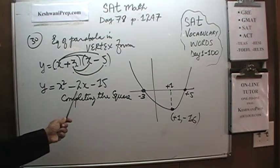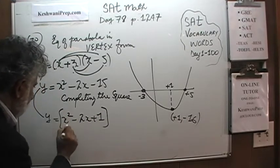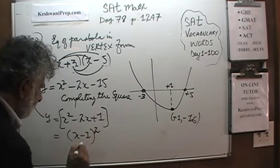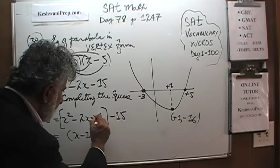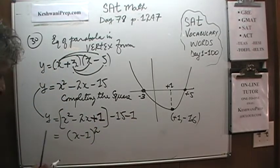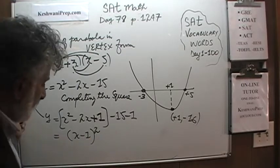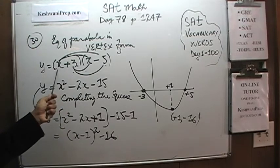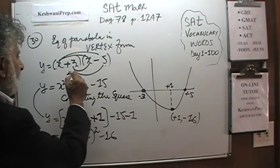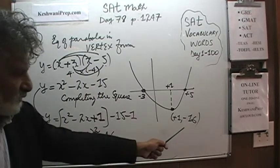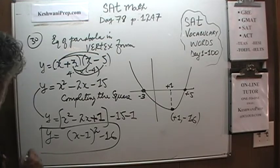We have x squared minus 2x. We write this as x squared minus 2x plus 1, which is (x minus 1) squared. Since we added 1 that wasn't originally there, we subtract 1 to undo it. So: y equals (x minus 1) squared minus 15 minus 1, which equals (x minus 1) squared minus 16. This matches the y-coordinate of the vertex we found earlier, and confirms the answer is D.